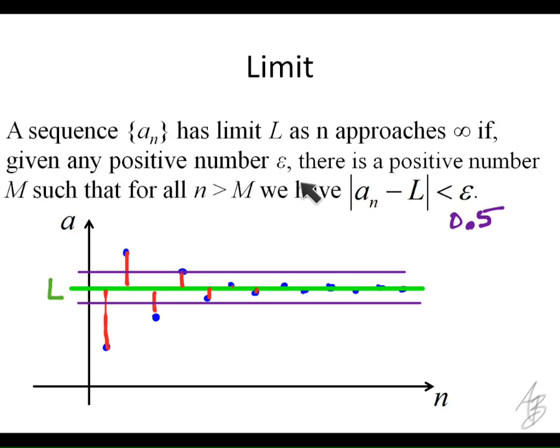What this definition says is that I can pick any number. I could pick 0.1 or 0.01 or 0.0001. I could pick any positive number, and at some point, all of the values are going to be within that.